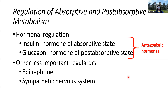Let's talk about the hormones regulating our fed and fasted states. Insulin is the hormone of the absorptive state and glucagon is the hormone of the post-absorptive state — they are antagonistic hormones. In the absorptive state, insulin is secreted in excess to take glucose from the blood and store it. Other important regulatory hormones include epinephrine and the sympathetic nervous system in general.